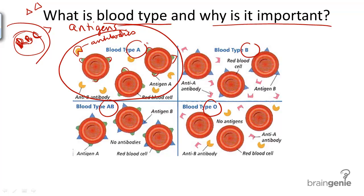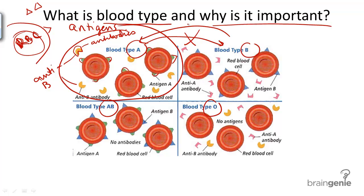Therefore, blood type A produces anti-B antibodies. So blood type A cannot donate to or receive from blood type B. If that happened, there would be a terrible blood clot and this person could ultimately die.